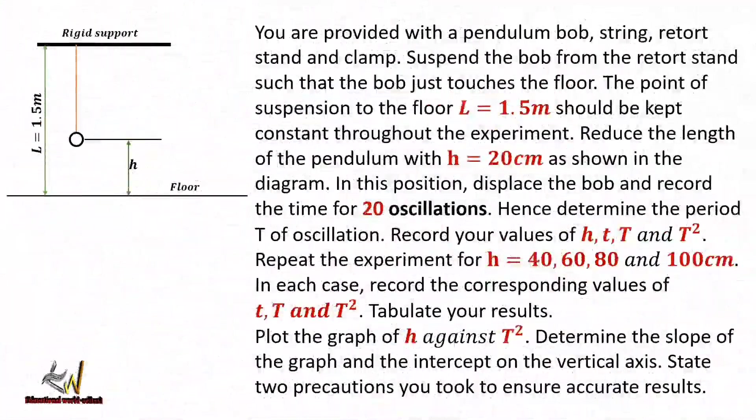Welcome to Educational World. In today's video lesson we'll be looking at a question involving a simple pendulum. You are provided with a pendulum ball, string, retort stand, and clamp. Suspend the bulb from the retort stand such that the bulb just touches the floor. The point of suspension to the floor, L, is equal to 1.5 meters, and that should be kept constant throughout the experiment.